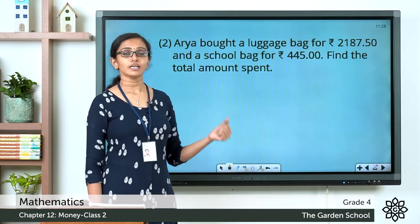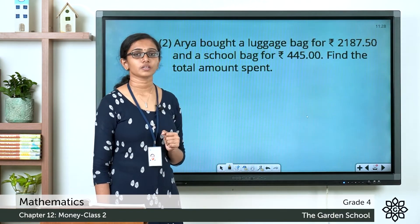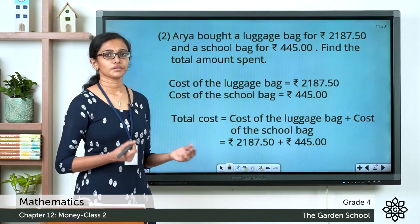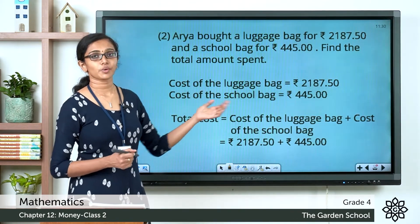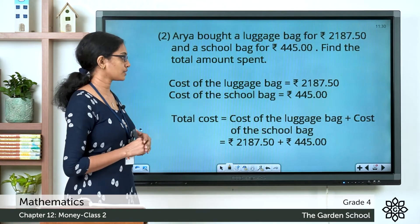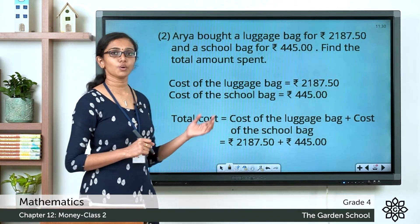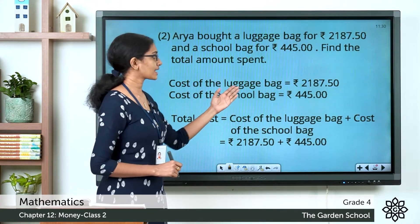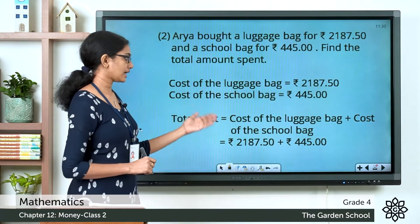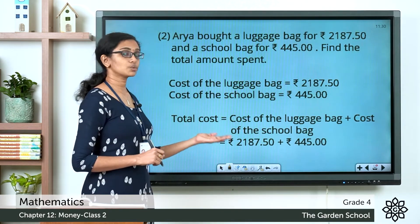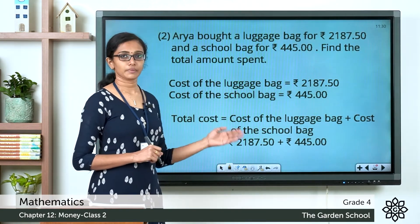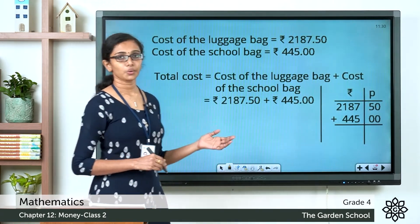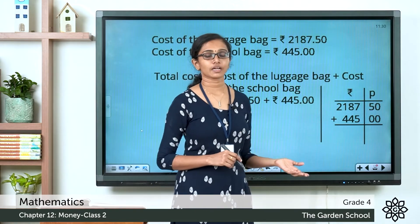We can find the total by adding the two amounts. Cost of luggage bag = 2187 rupees 50 paise. Cost of school bag = 445 rupees. Total cost = cost of luggage bag + cost of school bag = 2187 rupees 50 paise + 445 rupees. Let's do the addition in the working column, writing the given amounts in their proper columns.